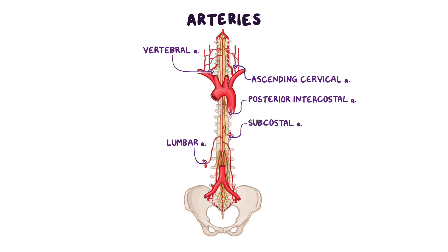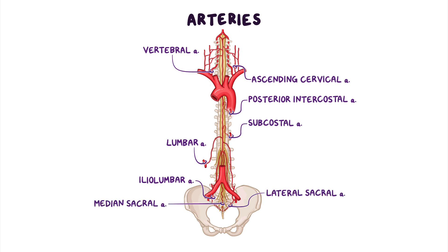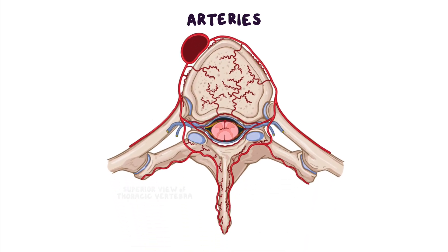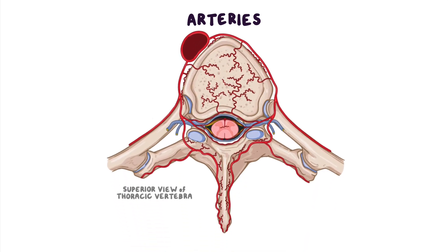And finally, in the pelvis, parent arteries include the iliolumbar, lateral sacral, and median sacral arteries. Now, as these parent arteries cross the external surfaces of the vertebrae, they give rise to the periosteal, equatorial, and spinal branches that directly supply the vertebrae.